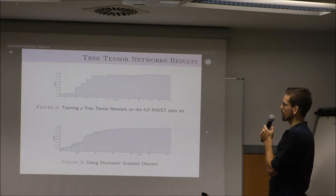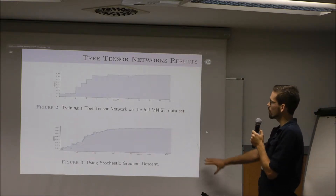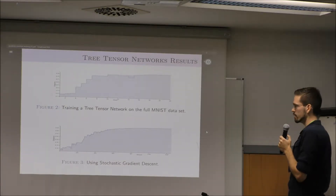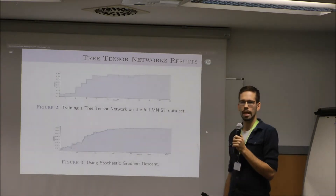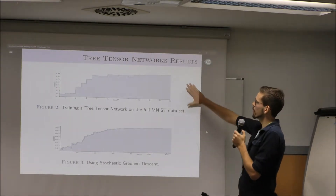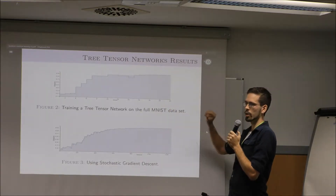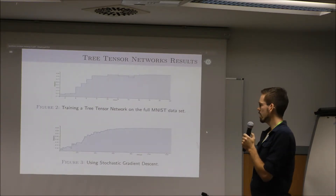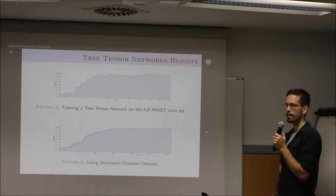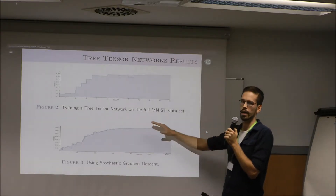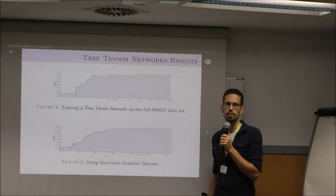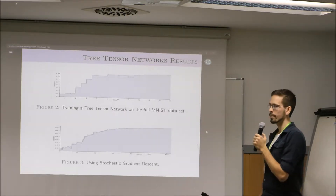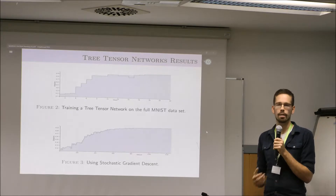I have some results here showing what happens when we train a model like that using a full batch gradient descent and then a stochastic mini-batch gradient descent. In both cases we can get into the very high 90s in accuracy — almost 98% on held-out data with the mini-batch gradient descent. Those of you who do machine learning in practice know that MNIST is a very easy problem and sort of a sanity check more than anything.